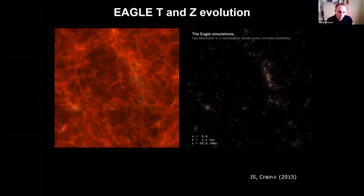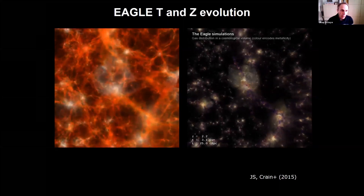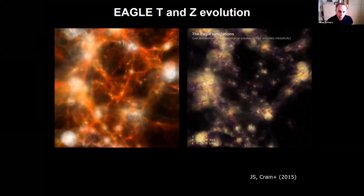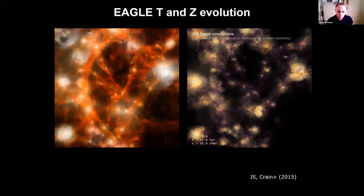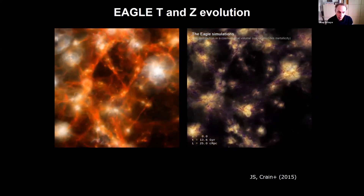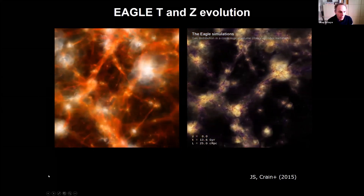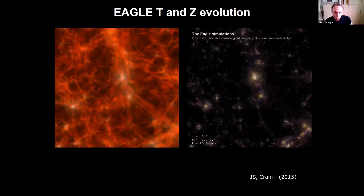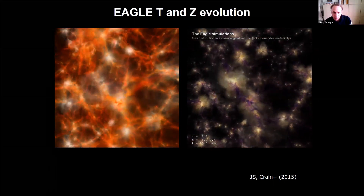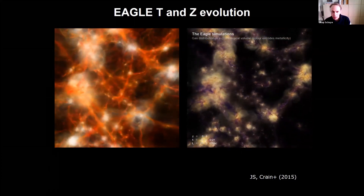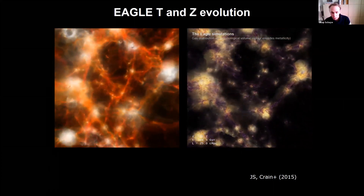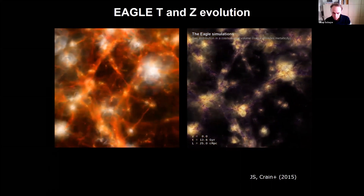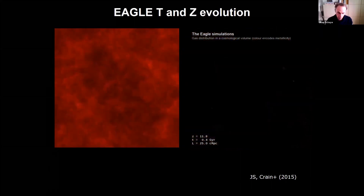Here's a short video of the evolution in the EAGLE simulation. On the left, color coding is temperature; on the right, it's metallicity. The scale is 25 megaparsecs. The video runs quickly so you can see how violent it is — the explosions you're seeing are real. The large ones are mostly driven by AGN; outflows driven by star formation are smaller and harder to see at this scale.